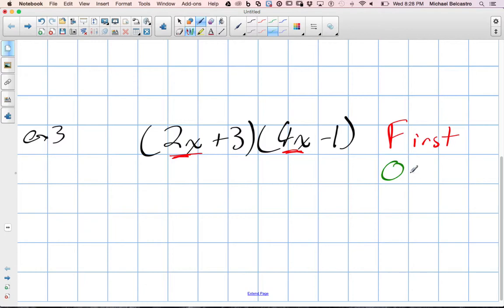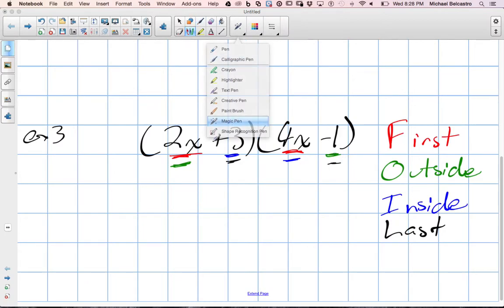Outside term would be farthest to the left and farthest to the right. The inside. Inside terms are closest to the right, closest to the left. And then L would be the last terms. So the last term in each bracket, 3 times negative 1. So it's just an order in order to show you how to multiply things.